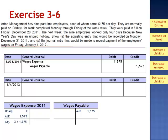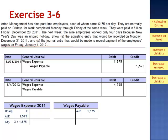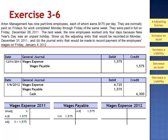On January 4th, 2012, the employees will receive a total of four days' pay. Wages expense will be debited for three days' pay: $1,575 per day multiplied by three days equals $4,725. Wages payable will be debited for the one day that was accrued on December 31st, and the total credit to cash will be four days at $1,575 per day — $6,300.